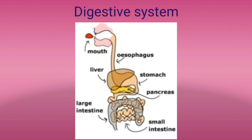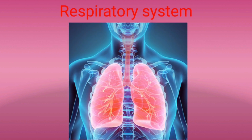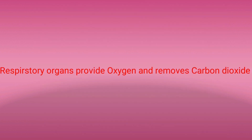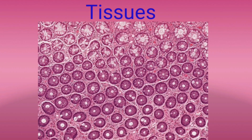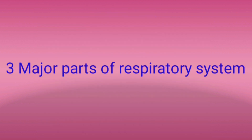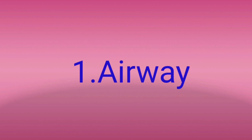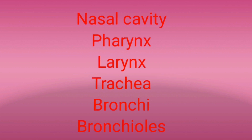The next organ system we are going to learn is the respiratory system. The process of inhaling oxygen and exhaling carbon dioxide is known as respiration. The respiratory system provides oxygen to the tissues of the body and removes carbon dioxide from the tissues. Tissues are groups of cells. There are three major parts forming the respiratory system: airway, lungs and muscles of respiration. The airway includes organs such as nasal cavity, pharynx, larynx, trachea, bronchi and bronchioles.